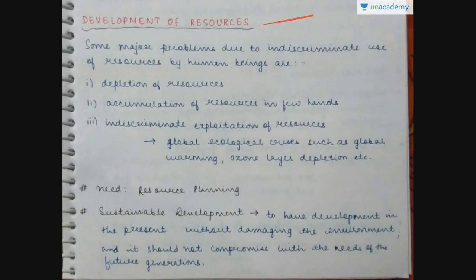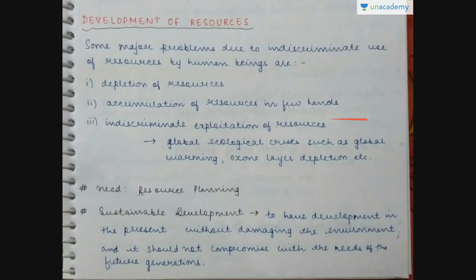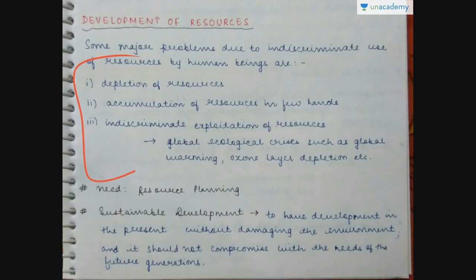Regarding the development of resources, some major problems that have arisen due to indiscriminate use of resources by human beings are: depletion of resources, accumulation of resources in few hands meaning improper distribution, indiscriminate exploitation of resources, and also global ecological crises such as global warming and ozone layer depletion. Because of these problems, we need resource planning.